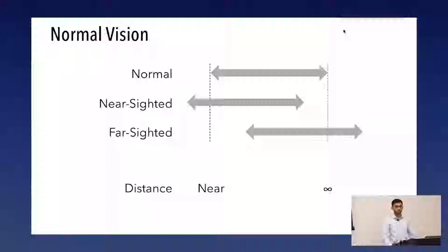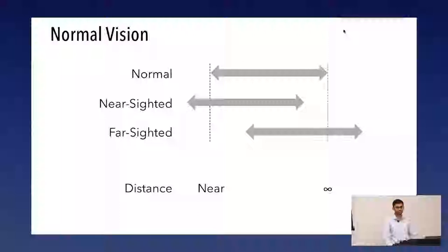When people think of visual impairment, they often go to nearsightedness and farsightedness. How nearsightedness and farsightedness work is that there is a single shift in power, usually caused by some refractive error in your cornea or the length of your eyeball, that causes you to focus things to the wrong distance. This effectively results in a shift of the entire focusing range a little bit too close or a little bit too far.